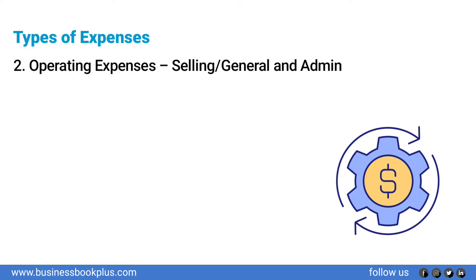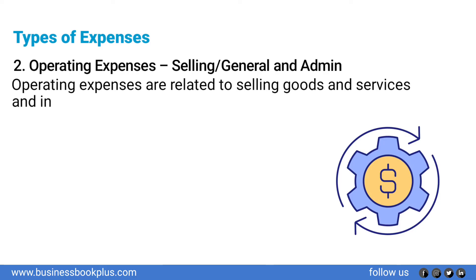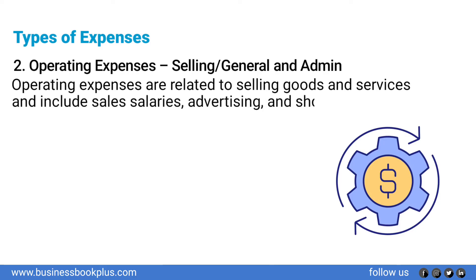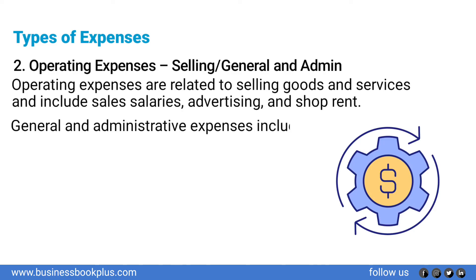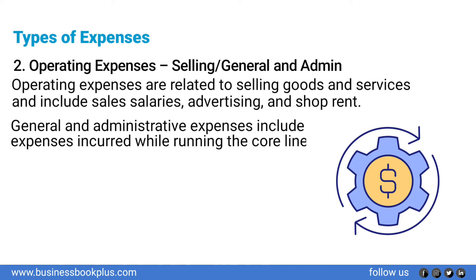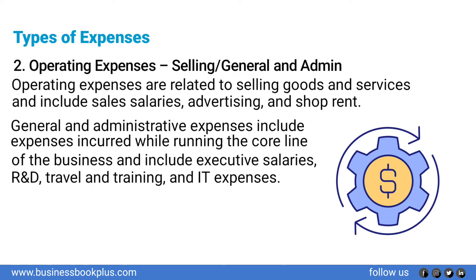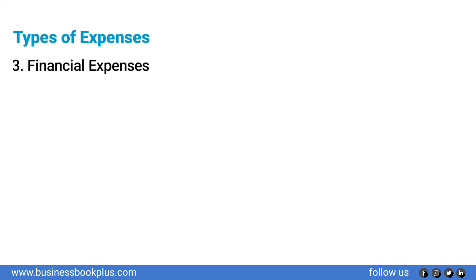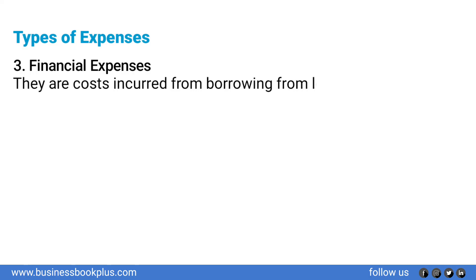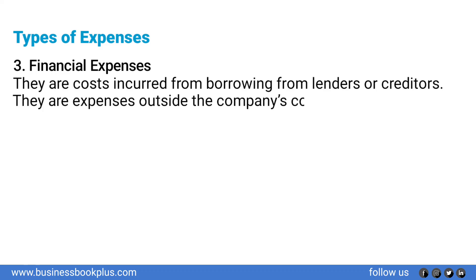Number two: Operating expenses are related to selling goods and services and include sales salaries, advertising, and shop rent. General and administrative expenses include executive salaries, services, R&D (research and development), travel and training, and IT expenses. Number three: Financial expenses are costs incurred from borrowing from lenders or creditors — expenses outside the company's core business.